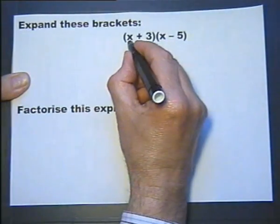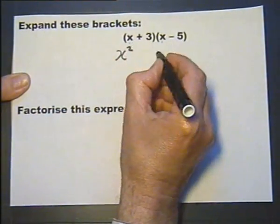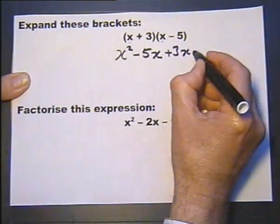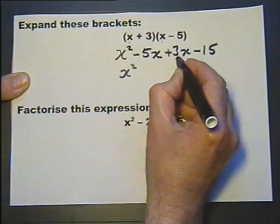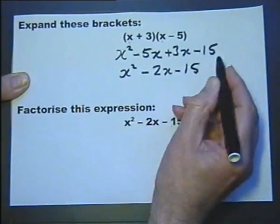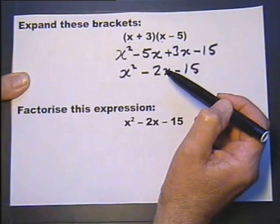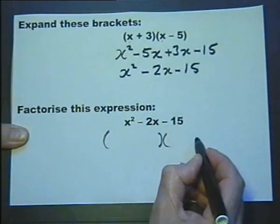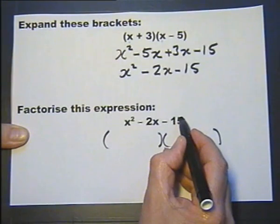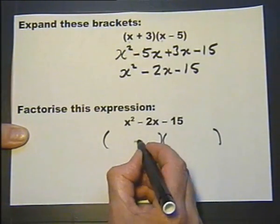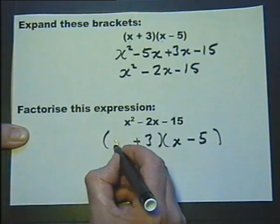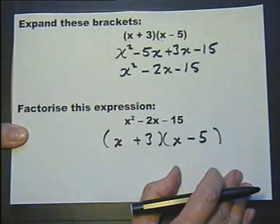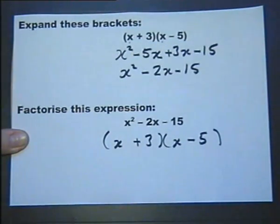We get x multiplied by x, then x multiplied by minus 5, then plus 3 multiplied by x, and plus 3 multiplied by minus 5. Simplifying gives us the two middle terms combining to make minus 2x. That process is called expanding the brackets. The complete reverse process is called factorising — we take the expression and think: what numbers multiply to give minus 15 and add to give minus 2? We conclude plus 3 and minus 5. What I'm illustrating is that in mathematics we learn a process and we learn its reverse, sometimes called the inverse process — and this is the same with differentiation and integration.